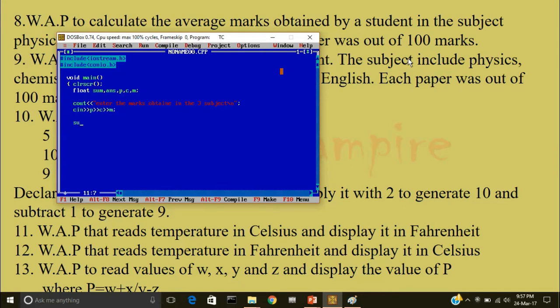I'll find the sum of the marks obtained in physics, chemistry and mathematics by adding them. p plus c plus m. Now to find the average of the marks obtained by the student, answer is equal to sum divided by 3 followed by a semicolon.